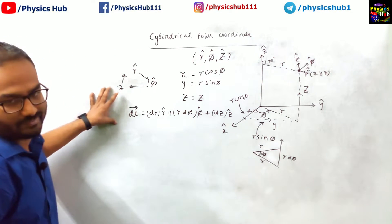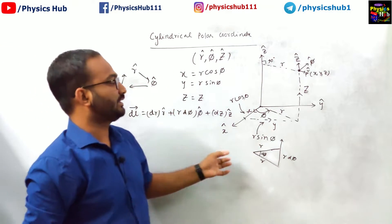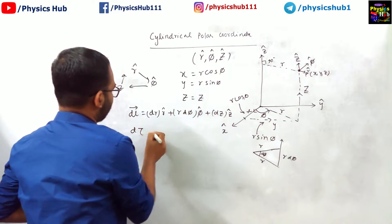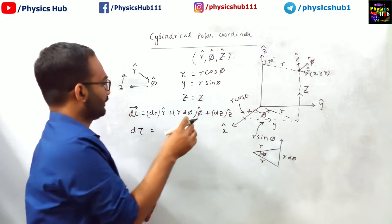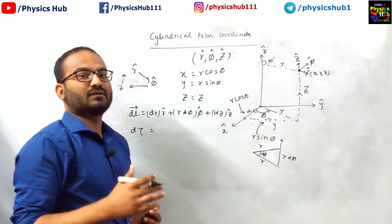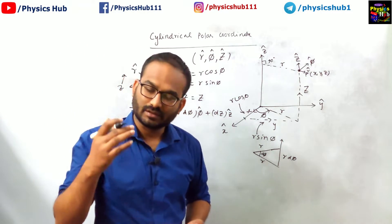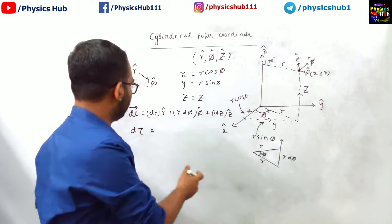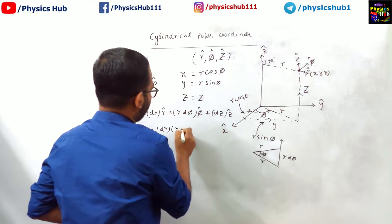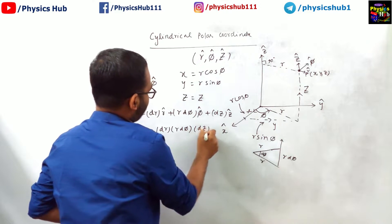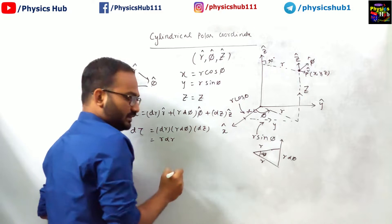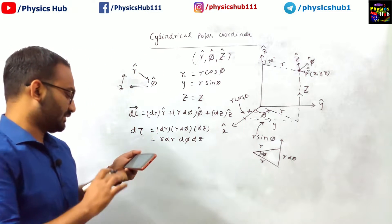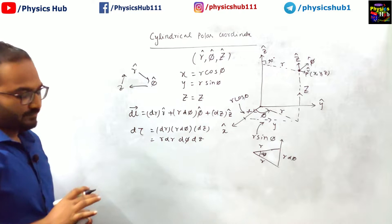Understanding the line element is very important because we can use it to find the surface element and volume element. For the volume element, just as in Cartesian we take the product dx dy dz, here we take the product of changes along r, phi and z directions: dr times r d phi times dz. Therefore the volume element in cylindrical polar coordinates is r dr d phi dz.